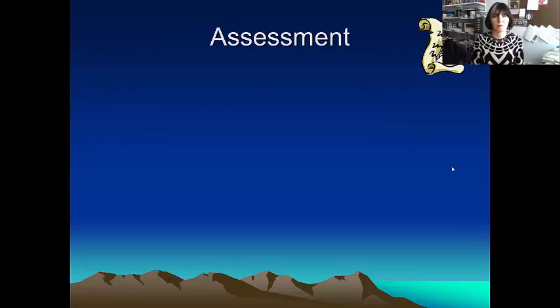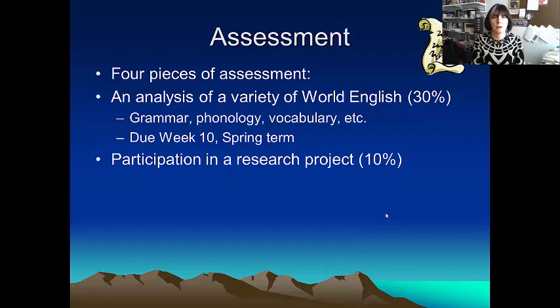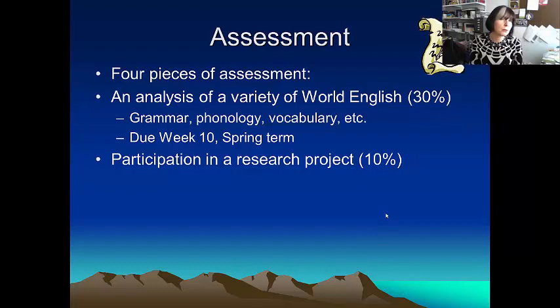Assessment for the course: there are four pieces of assessment. The first is an analysis of a variety of World English, where you look at grammar, phonology, vocabulary, etc. This is due in week 10 of the spring term. You also participate in a research project, and you have to do a reflective post, thinking about taking part in the research project and what you've learned from doing it.